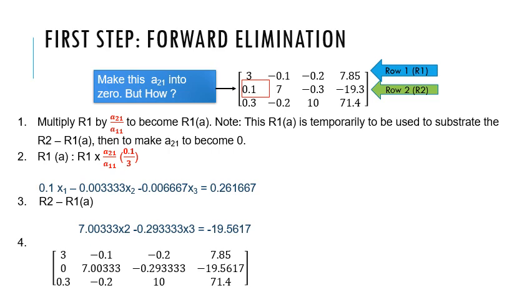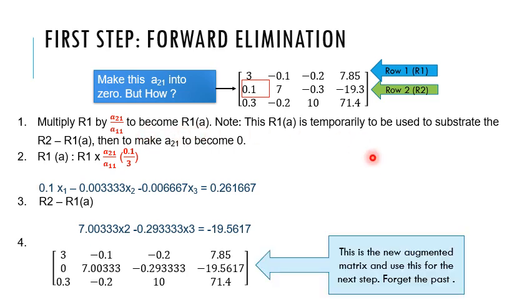We multiply R1 by A21 divided by A11 to become a new R1A equation. Please note that this R1A equation is temporarily to be used and we will not put it in the augmented matrix. Then, we use the R2 equation to subtract the R1A equation to make A21 to become 0. This is the new augmented matrix and we will use this for the next step. Forget the past matrix form.